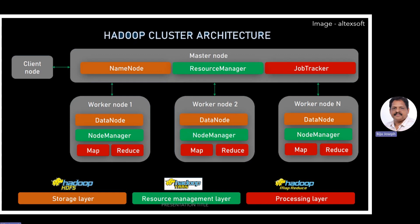Then we have the Secondary NameNode. It is a helper to the NameNode that performs housekeeping functions like periodic merging of the namespace and edit logs. Looking at the worker node, you can see the DataNode — these are the slave nodes that store the actual data. An HDFS cluster typically has a large number of DataNodes, and each node stores a portion of the file system data.